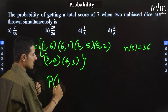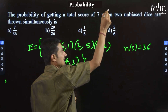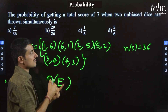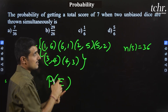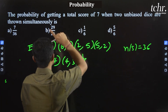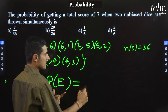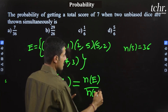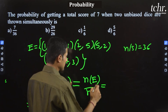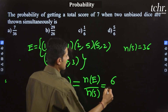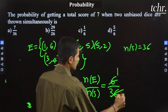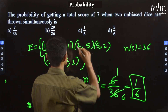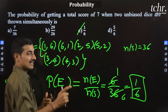So the probability of getting a total score of seven when two unbiased dice are thrown simultaneously is n of E by n of S — applying the probability formula, that gives us 6 by 36, which simplifies to one divided by six. Option C is the correct answer.